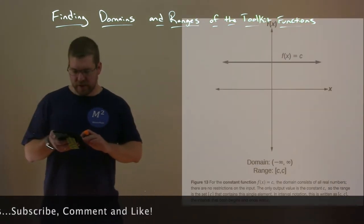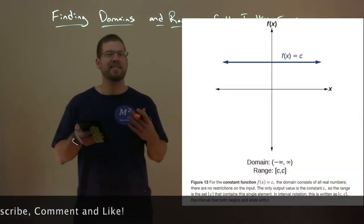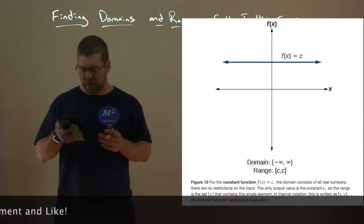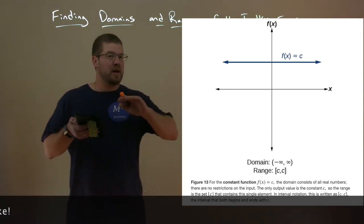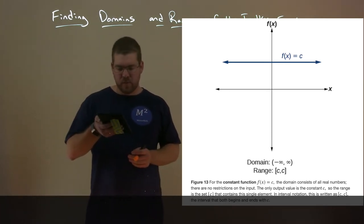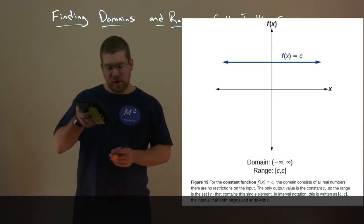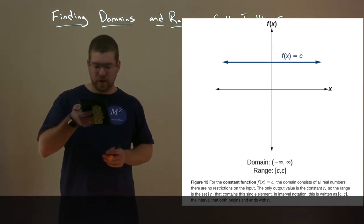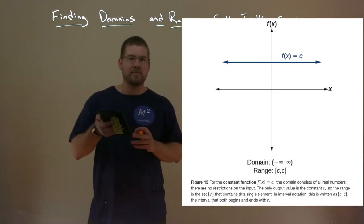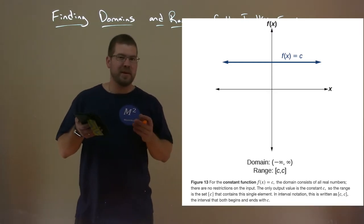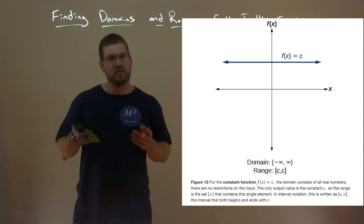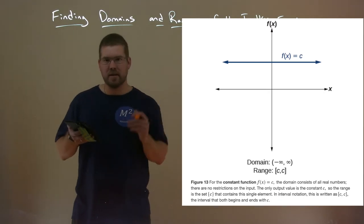Our first one here is f of x equals c, being a constant. That's just going to be a straight horizontal line, and its domain is from negative infinity to positive infinity, and its range is basically just the c value itself, whatever the height is.